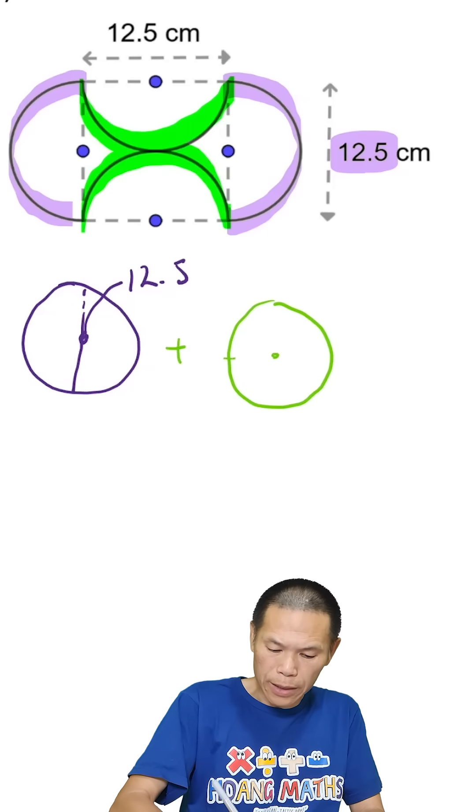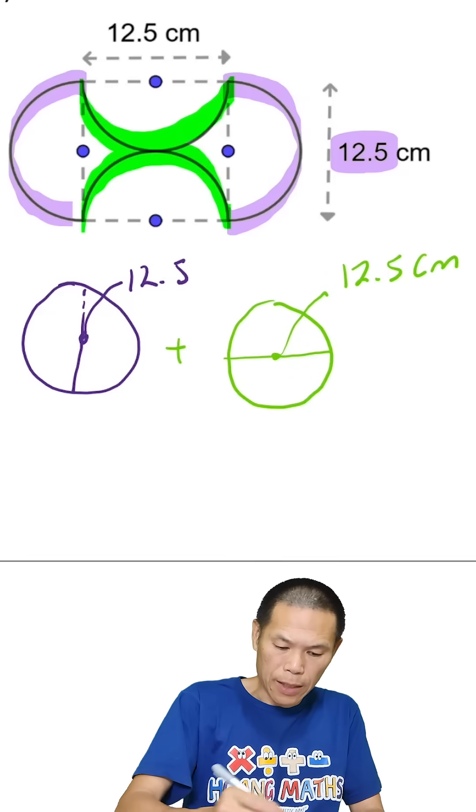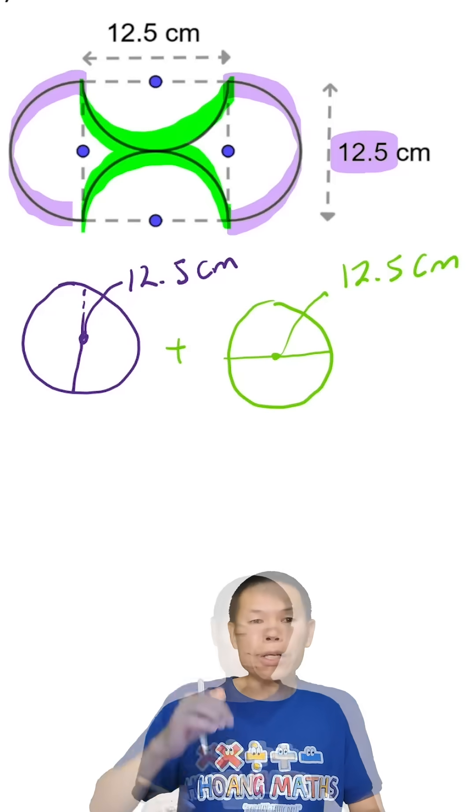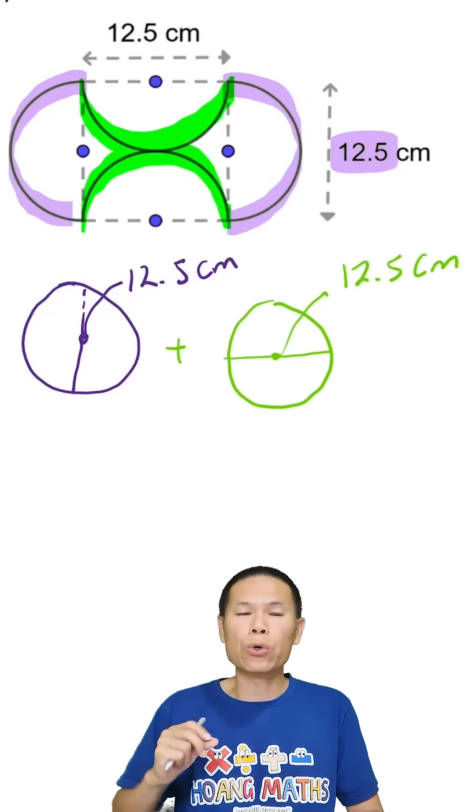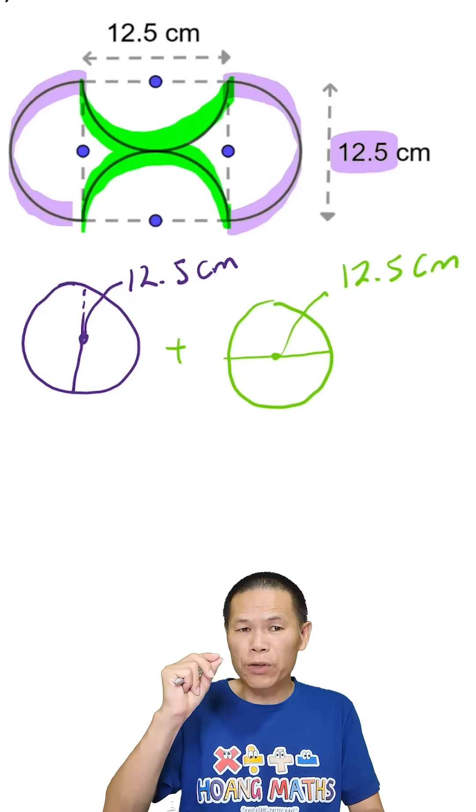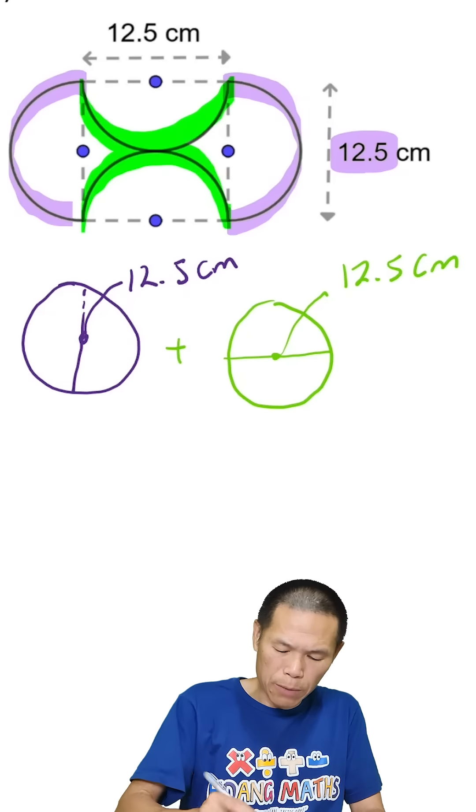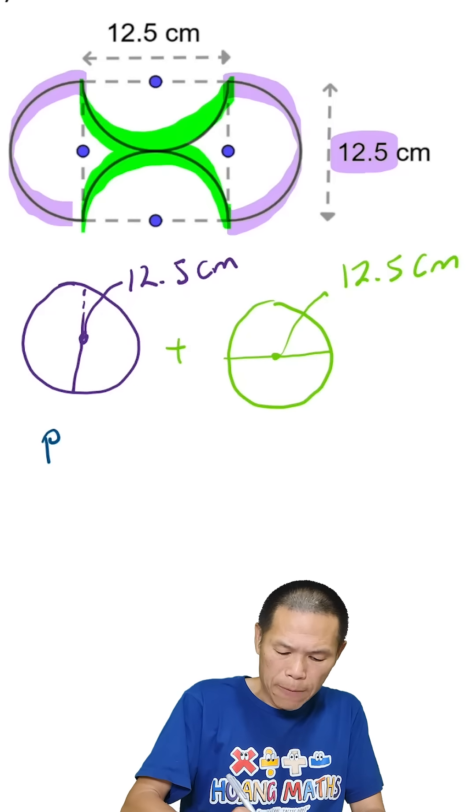This means that we have two circles and both are the same, so we just need to work out the circumference of one circle and multiply by two. So that will give me the perimeter.